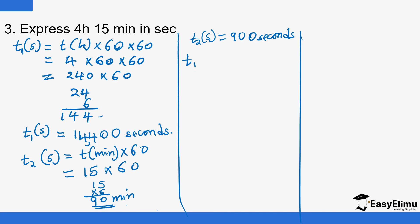The total time equals t1 in seconds plus t2 in seconds, which is 14,400 plus 900. Adding these together gives us 15,300 seconds.